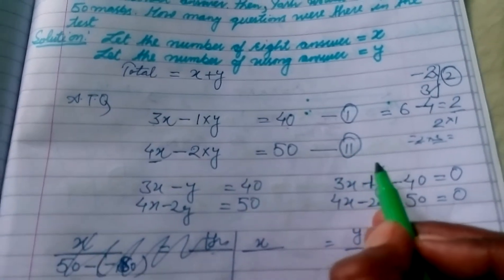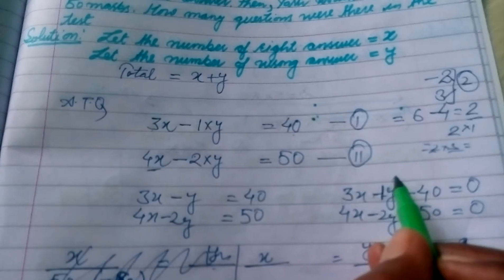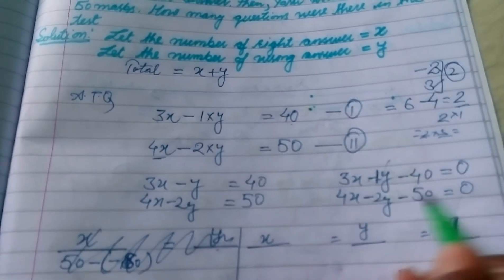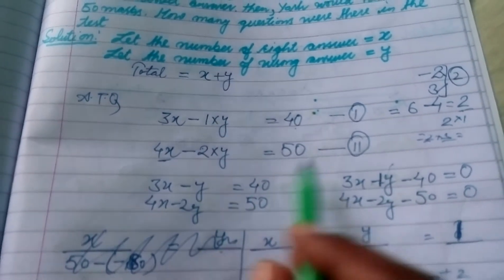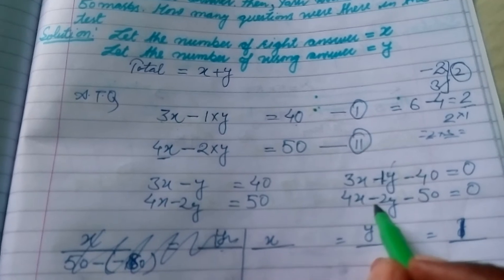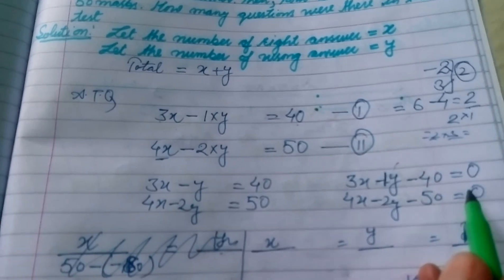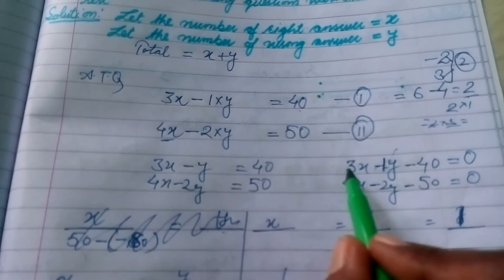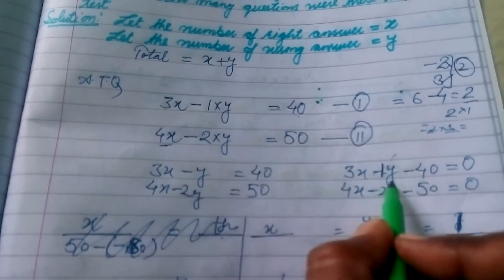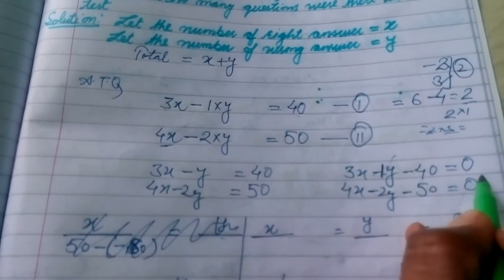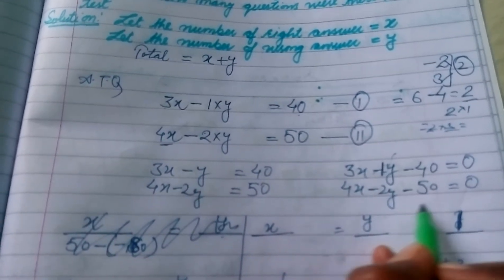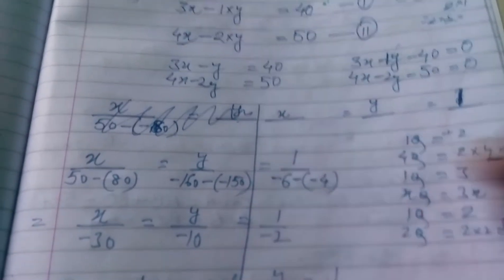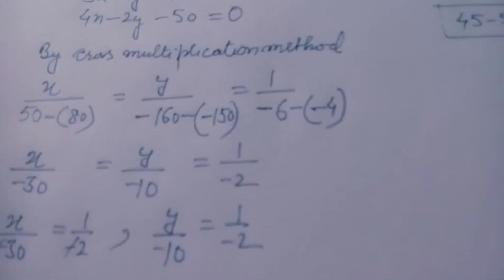Now we have both equations. Let us solve them using the cross multiplication method. First, rewrite the equations in standard form: 3X − Y − 40 = 0 and 4X − 2Y − 50 = 0.